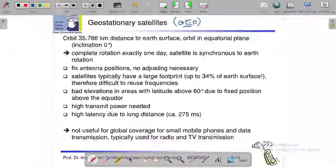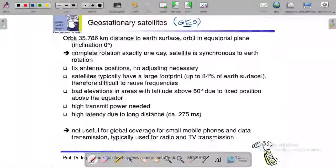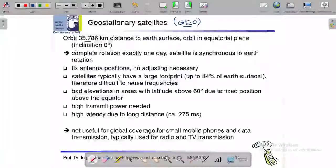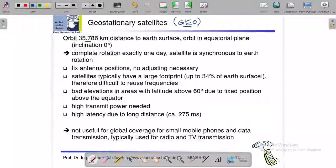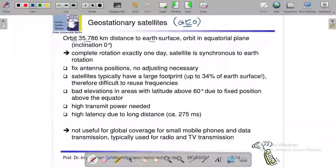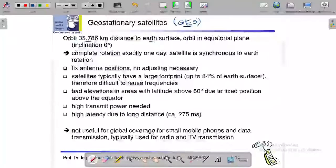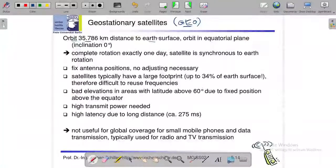Geostationary satellite orbit 35,786 km distance to the earth's surface, orbit 35,786 km and inclination 0 degree, okay.